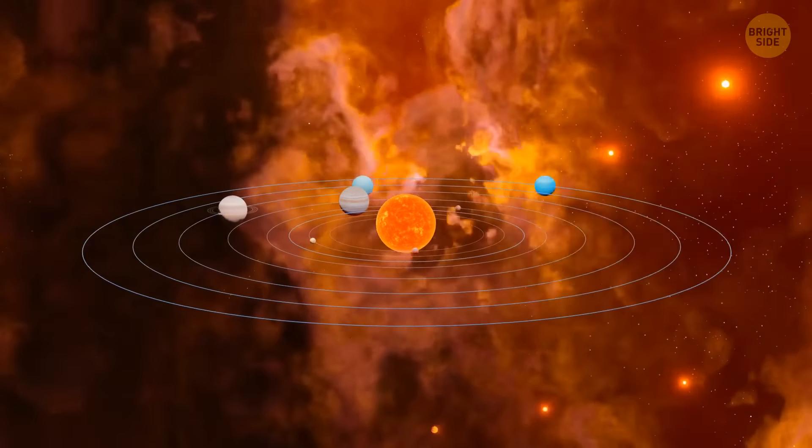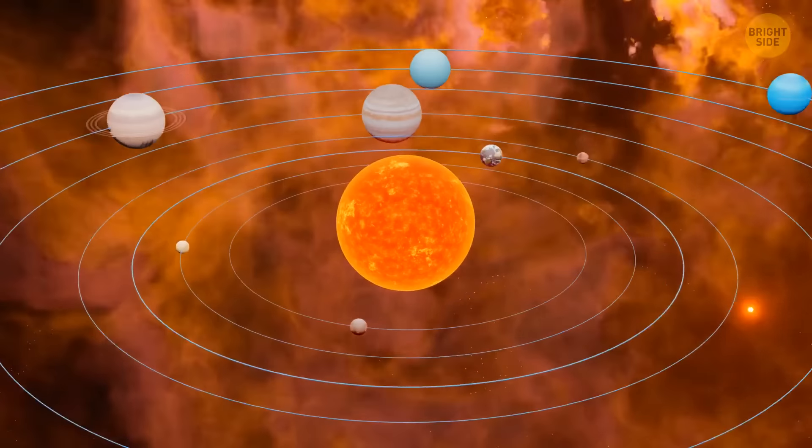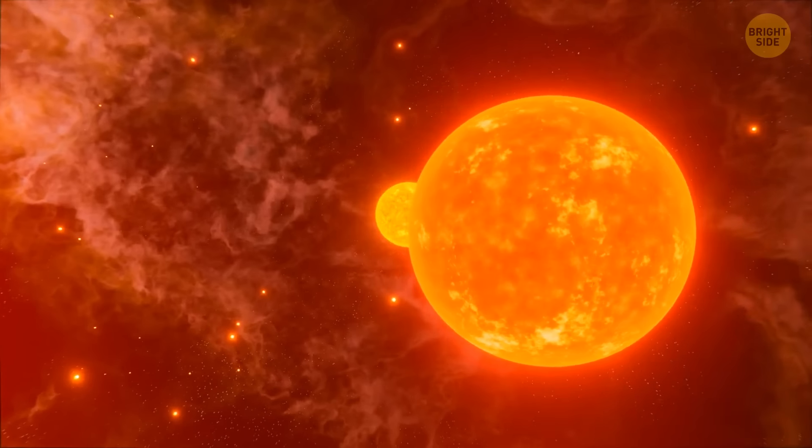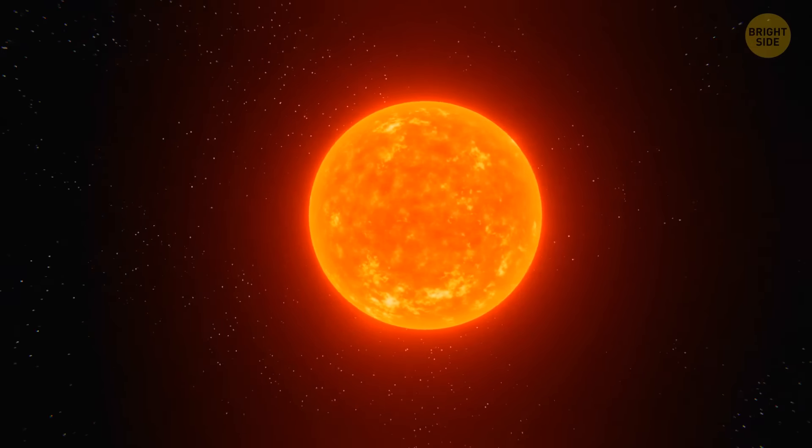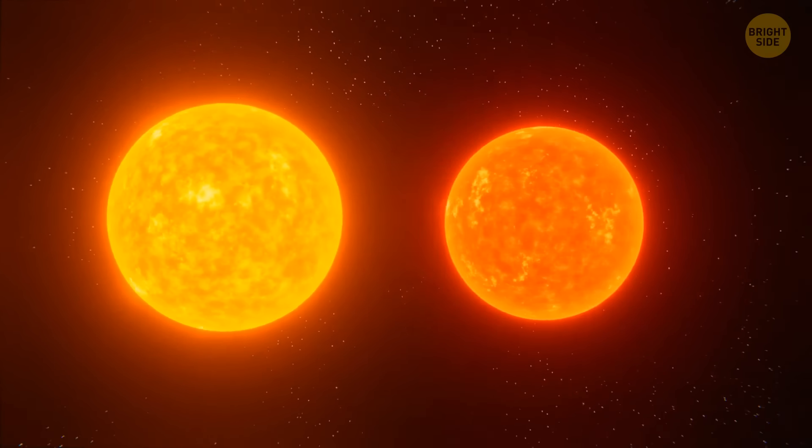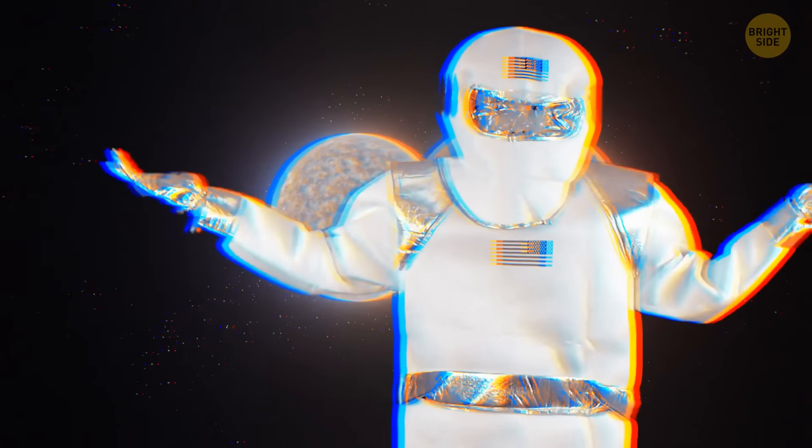But it's quite possible that this is not the whole story. And that, at the same time, along with our star, another one was born. The lost twin of the Sun. Made from the same materials under the same conditions. But why do we think that it exists?